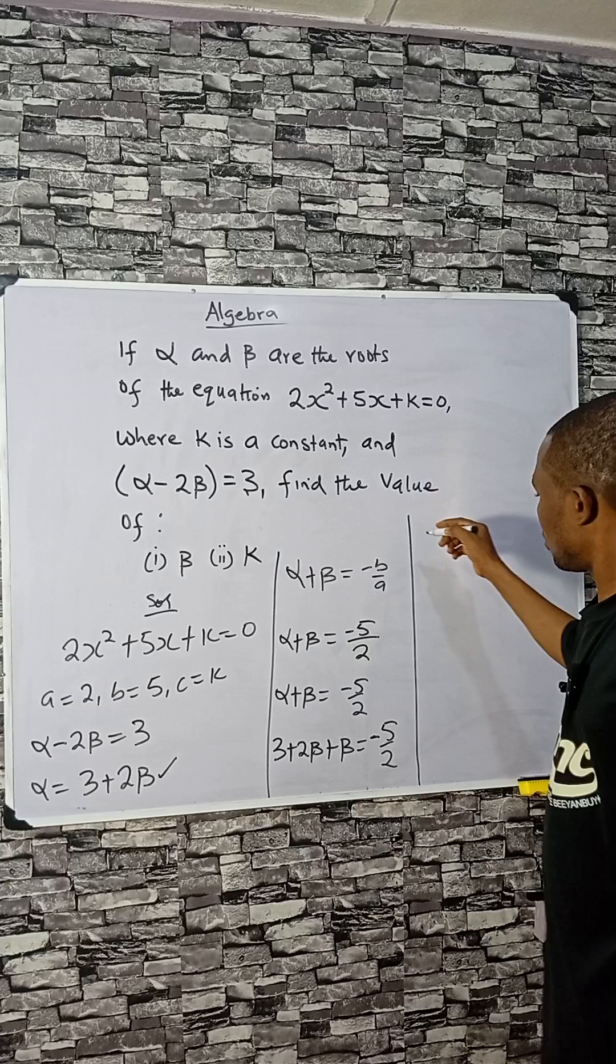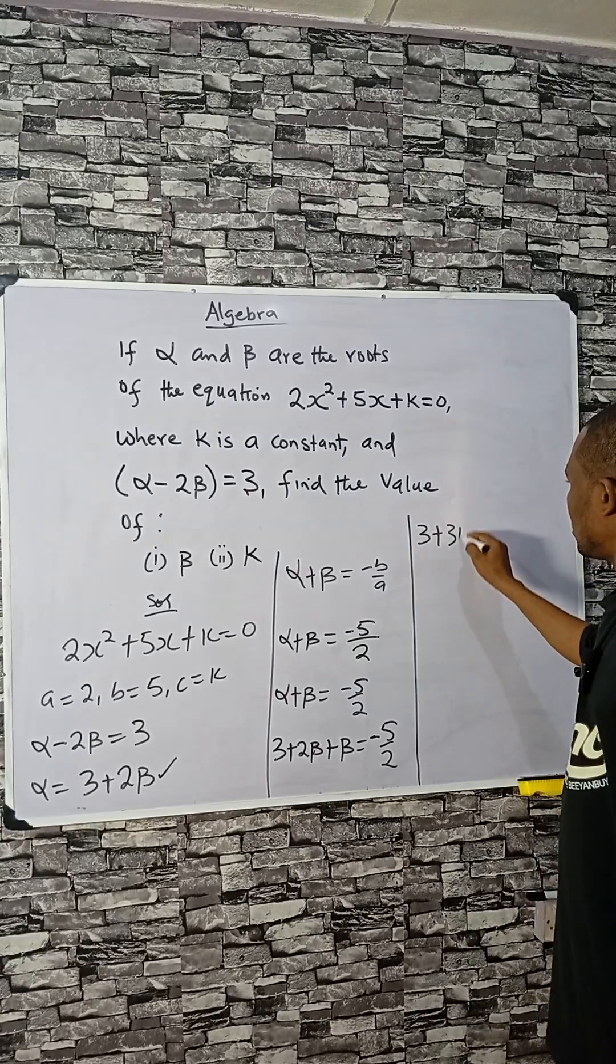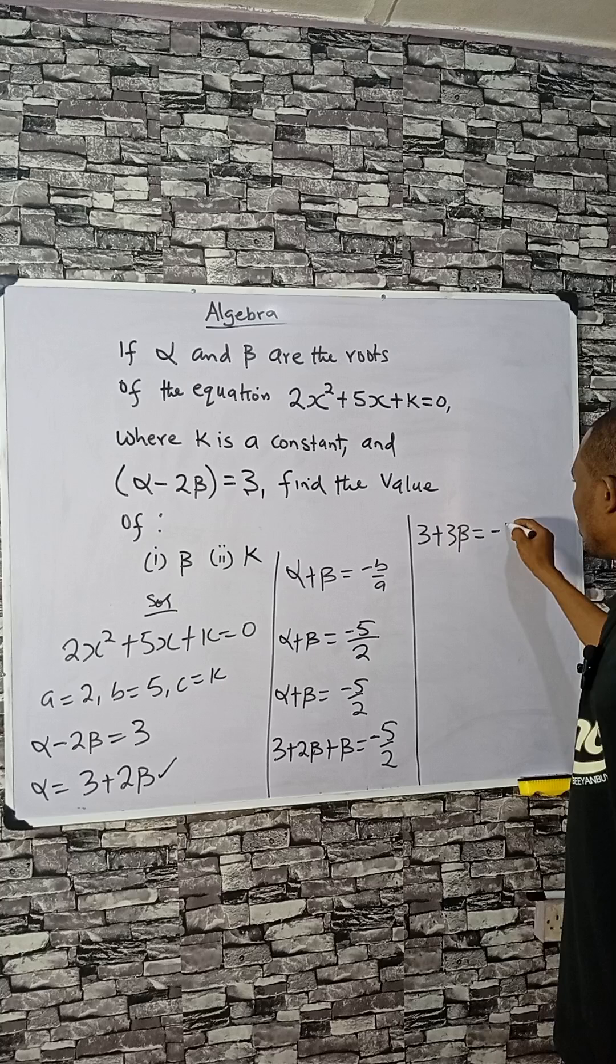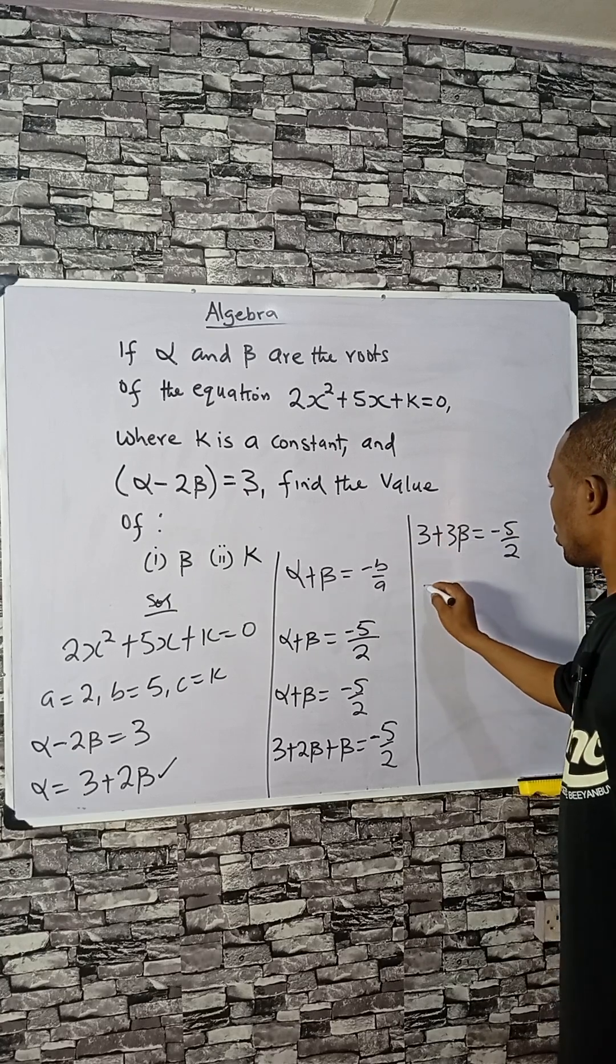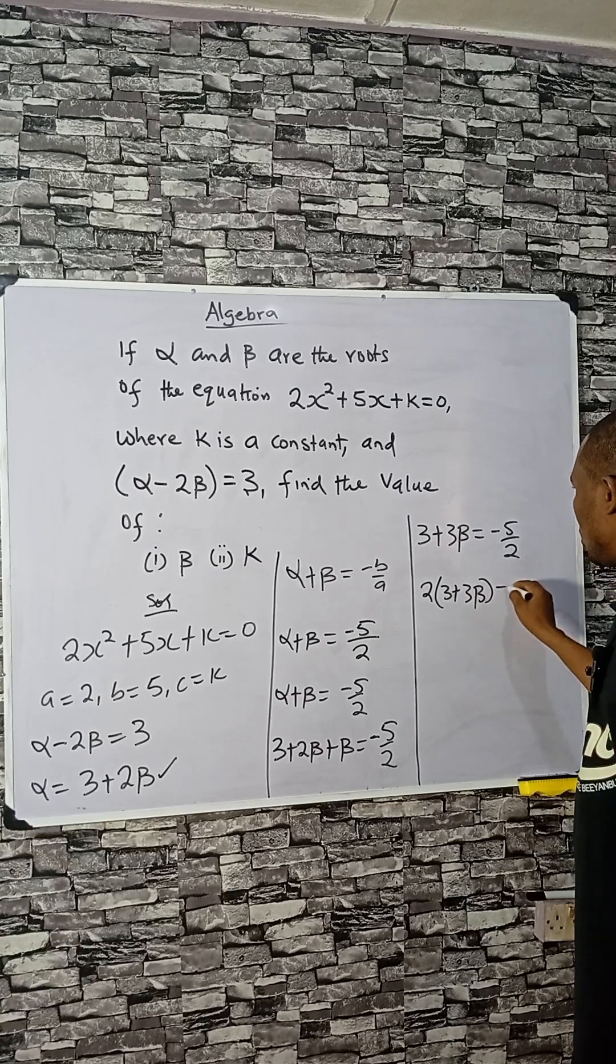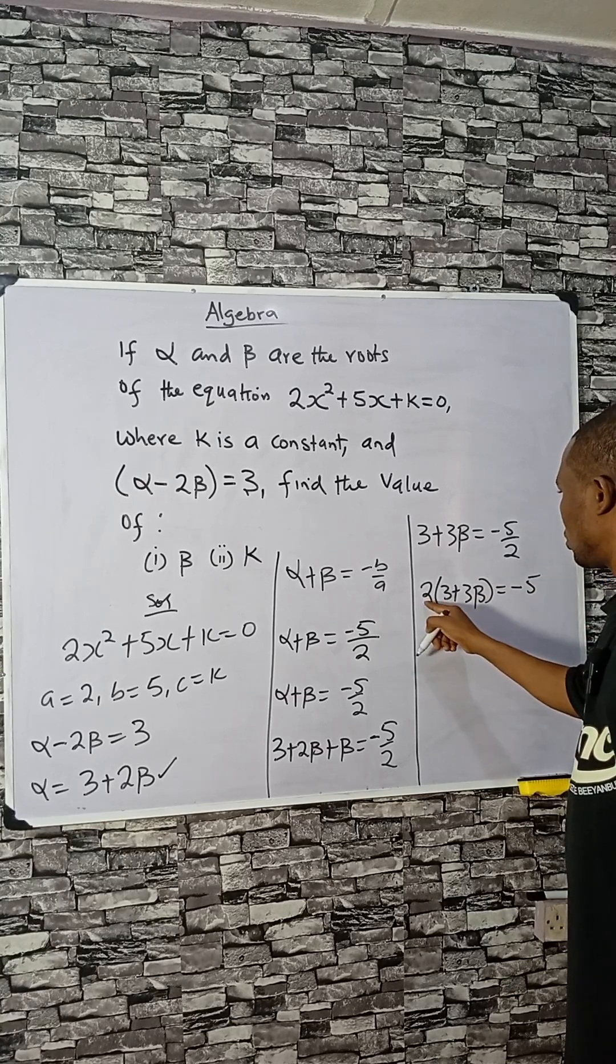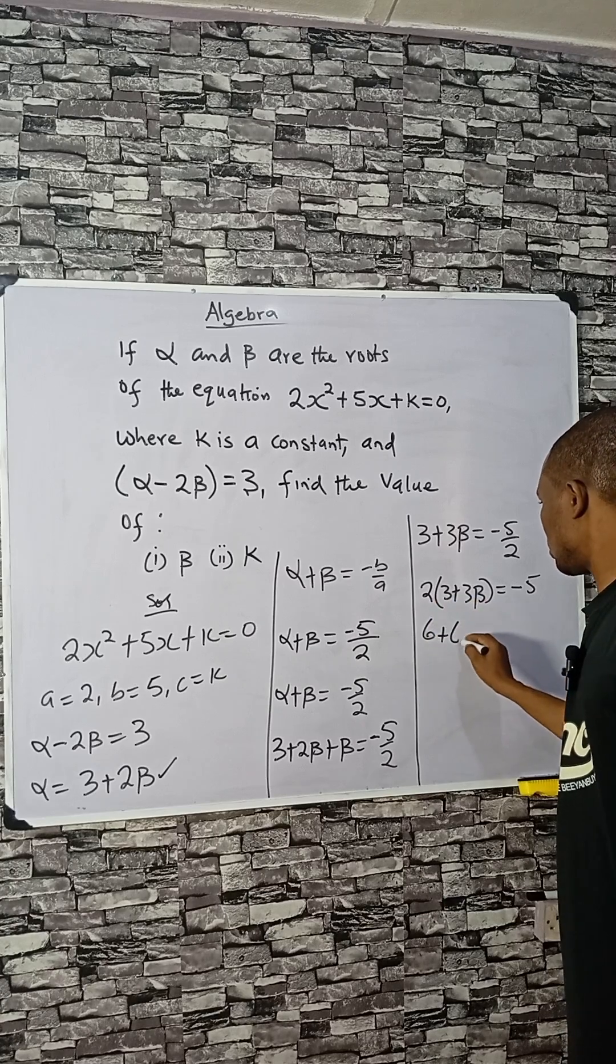So 3 plus 3 beta equals minus 5 divided by 2. If you cross multiply, you have 2 times 3 plus 3 beta equals minus 5. That will be 6 plus 6 beta equals minus 5.